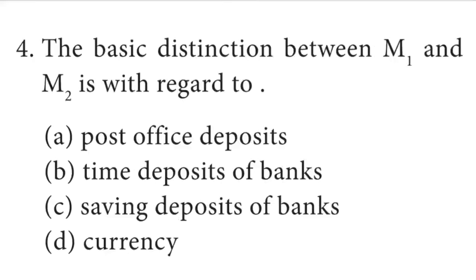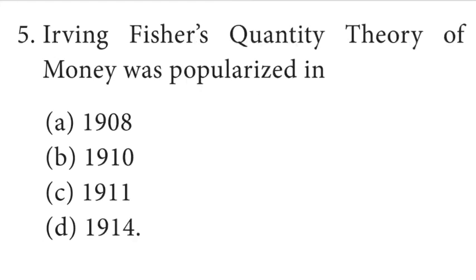Question number 4: The basic distinction between M1 and M2 is with regard to time deposits of a bank. Question number 5: Irving Fisher's quantity theory of money was popularized in 1911.